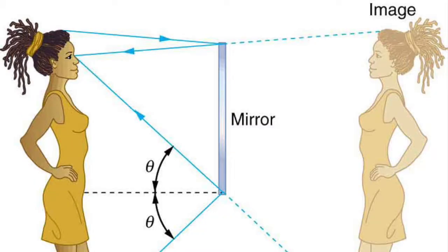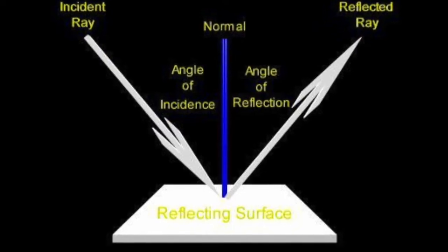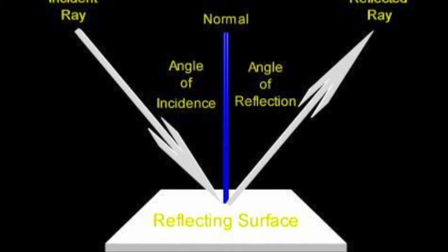The phone or computer you're watching — light actually hits everything. If you were standing in front of a mirror, light would hit you and then immediately hit the mirror. Light hits the mirror at an imaginary line called the normal.